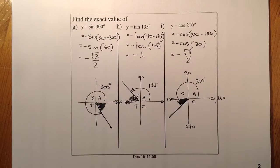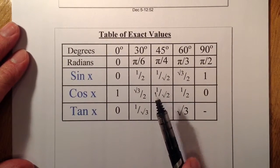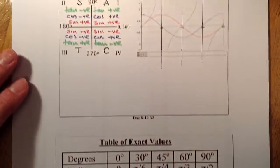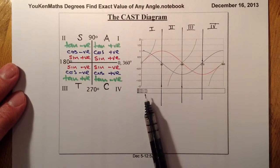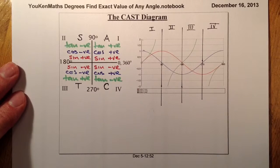That's the end of this work. We've used the table of exact values to find answers, and we've used the CAST diagram and related graphs to work out which quadrant an angle lies in and whether it's positive or negative. Hopefully you now have a better understanding of working out angles greater than 90 degrees and finding their exact value.